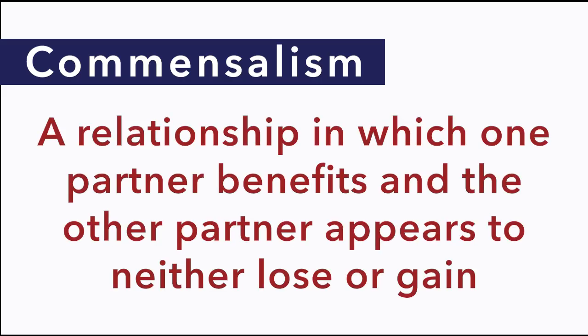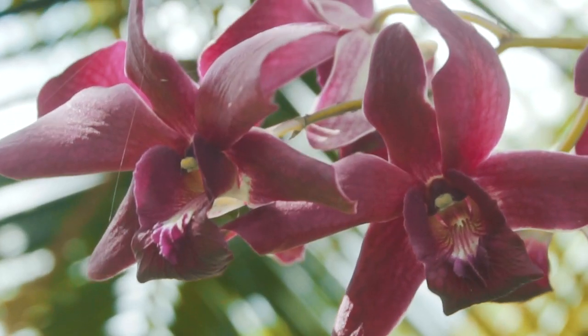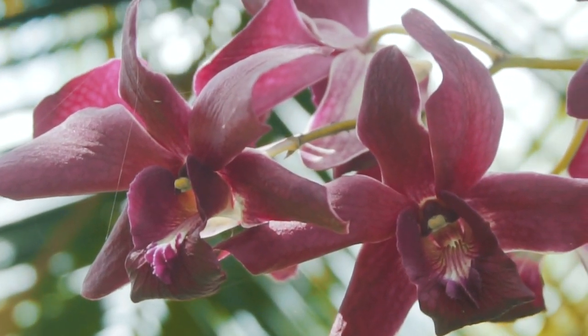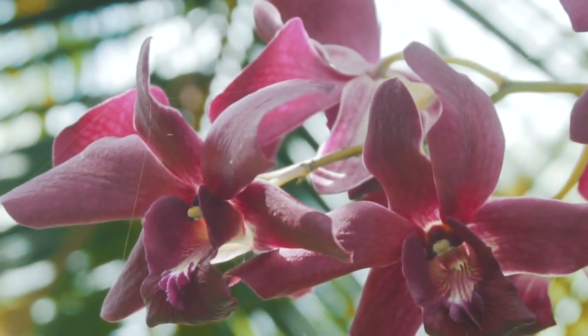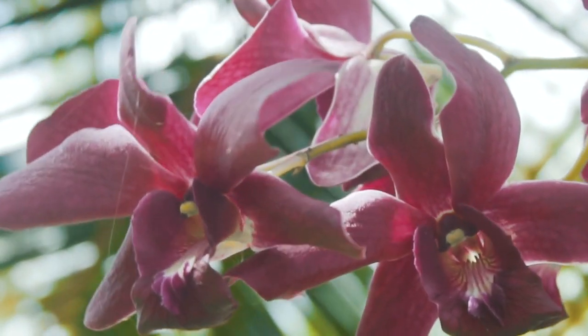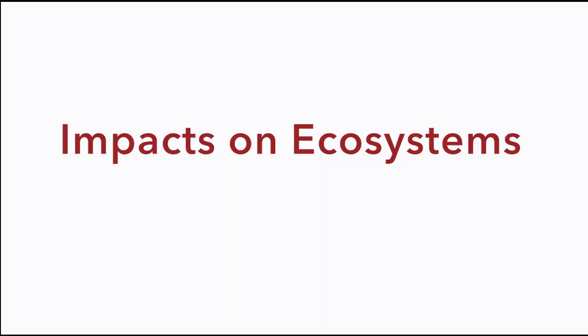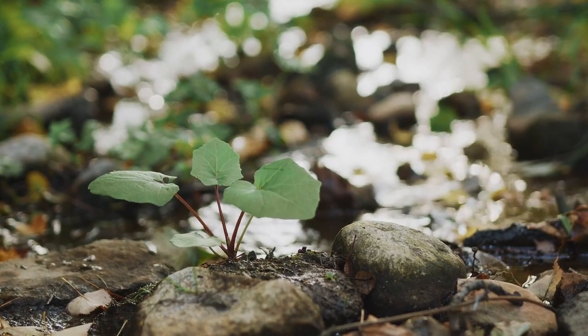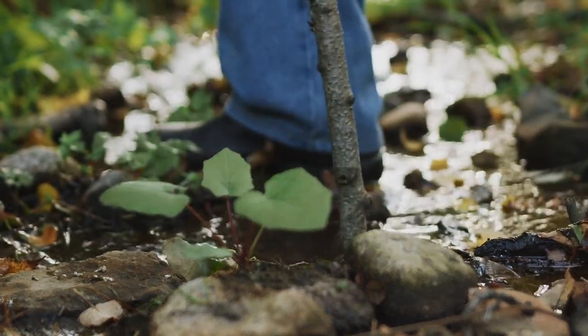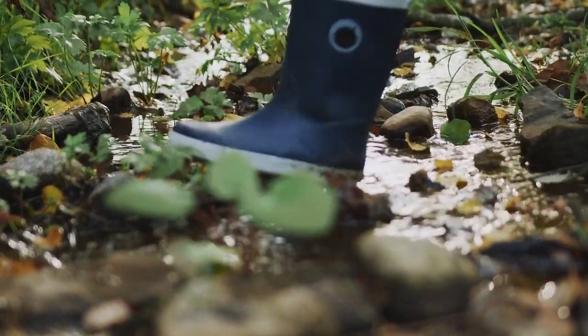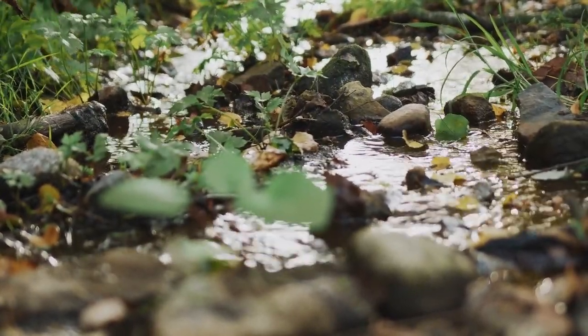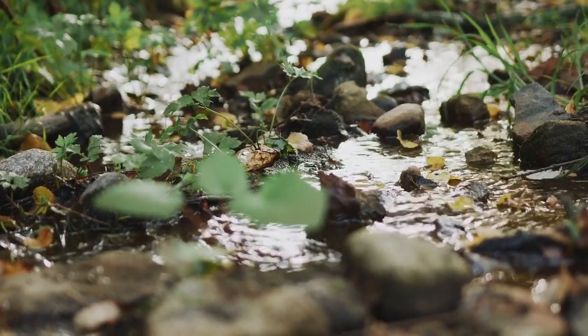Commensalism is a symbiotic relationship in which one partner benefits and the other partner appears neither to lose nor to gain from the relationship. For example, many species of flowering orchid live high up attached to the trunks of trees. The orchids benefit by having a safe place to live and a constant source of water from rain dripping down the tree trunks. The trees seem neither to benefit nor to lose from the presence of the orchid. Symbiotic relationships are just a few of the ways in which organisms interact with one another in ecosystems. Ecosystems are made up of organisms interacting with all of the parts — living and non-living — in an environment, so all organisms have some kind of impact when they interact in their ecosystems.